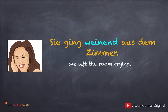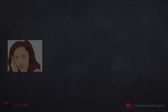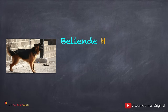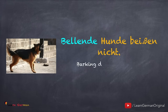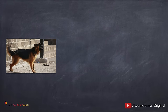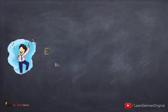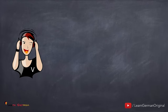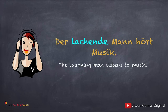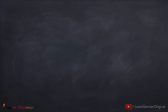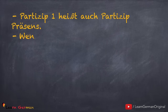Sie ging weinend aus dem Zimmer. Bellende Hunde beißen nicht. Er steht vor mir singend. Der lachende Mann hört Musik. Und was ist Partizip 1?